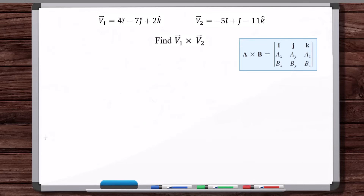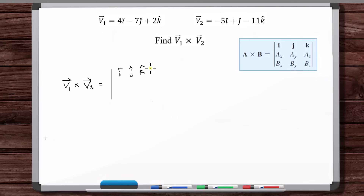Now let's use the determinant method. A cross B is this determinant. So we write V1 cross V2 as a 3×3 matrix with i-hat, j-hat, k-hat in the first row. Then the components of V1: 4, minus 7, 2. And the components of V2: minus 5, 1, minus 11. Now you just take this determinant.